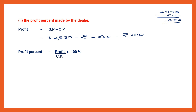Now we can find the profit percent using the formula: profit divided by cost price into 100%. Profit is 380 divided by cost price 2,500 into 100%. We can cancel zeros — one zero here and one zero here — and cancel 25 and 10 by 5: 5 fives are 25 and 5 twos are 10.